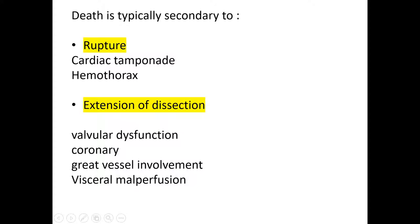Why does Type A carry such high mortality? This may happen due to rupture of the aorta or due to extension of the dissection. Rupture may occur into the pericardium, causing cardiac tamponade, or into the pleura, causing hemothorax. The dissection may extend to the aortic valve causing valvular dysfunction, to the coronary arteries causing coronary dissection, up to the great vessels, or down to any visceral vessel causing visceral malperfusion.